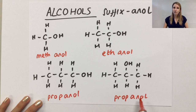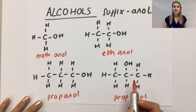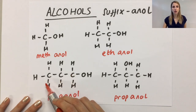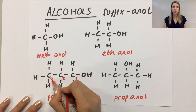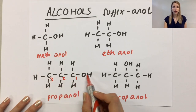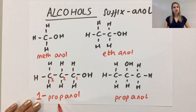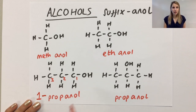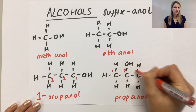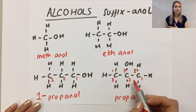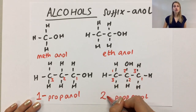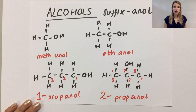Now these two are different, so I can't name them in exactly the same way. What we do is count the number of carbons and use that to tell us which carbon the OH group is bonded to. I'm going to count from the end closest to the OH group. On the left-hand one, counting from the left: carbon one, two, three — the OH group is attached to carbon number one, so we call this propanol. In the other example, the OH is in the middle, so either way the OH group is on carbon number two, and we call this one 2-propanol.